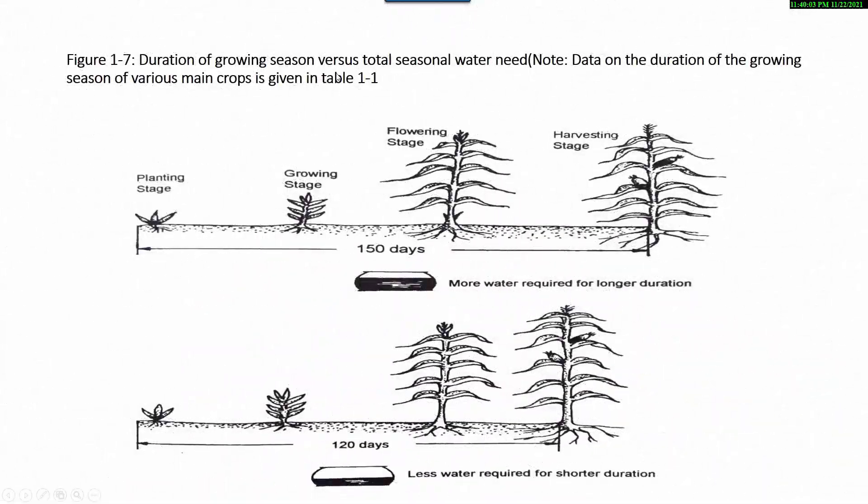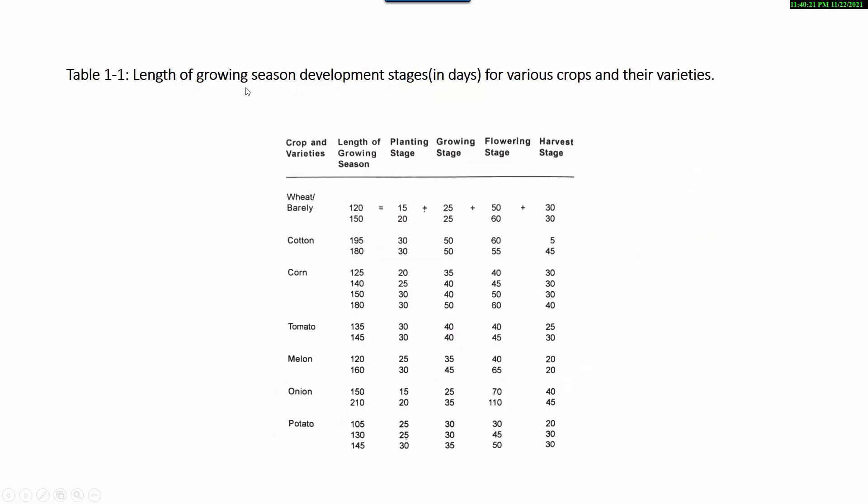Duration of growing season versus total seasonal water need. Data on the duration of the growing season of various main crops is given in Table 1-1. Table 1-1: Length of growing season development stages in days for various crops and their varieties, for example wheat, barley, cotton, corn, tomato, and potato.